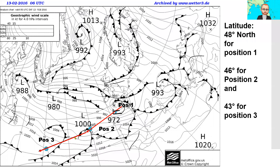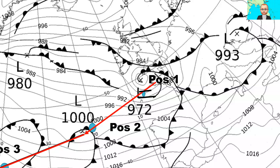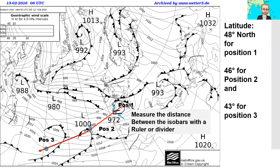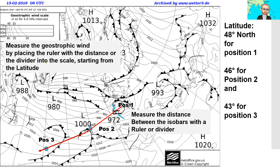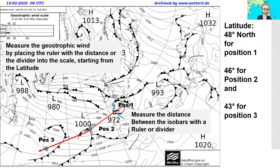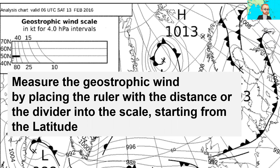We have three positions here where we want to get the real wind. The distance between the isobars at each position is what I have to measure — either by a ruler in centimeters or by a divider. Once I have the distance measured, I place the ruler or divider into the scale starting from the latitude line and go to the right side.